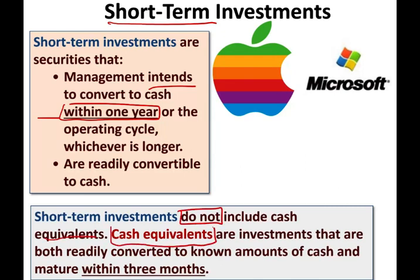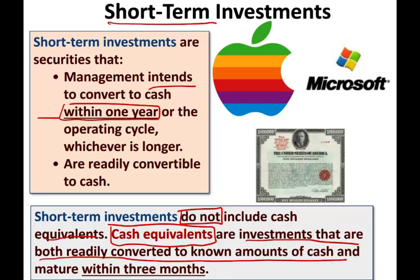What are cash equivalents? These are investments that are both readily convertible to a known amount of cash and mature within three months. An example will be a T-bill from the government. When you lend money to the government on a short-term basis, it's called a cash equivalent because you can get your money back within three months and there's no risk of change in value.